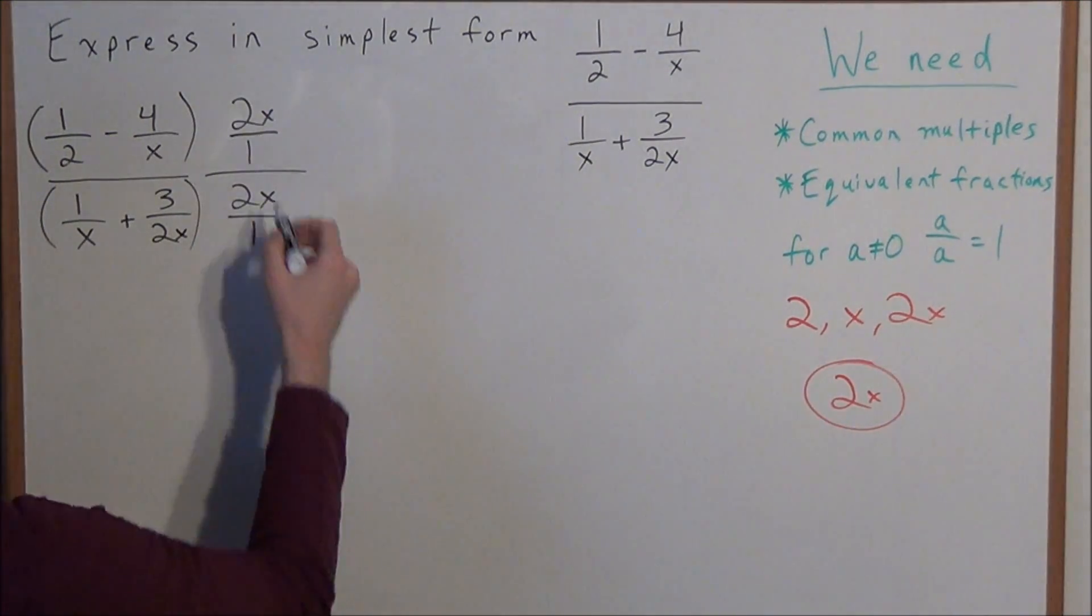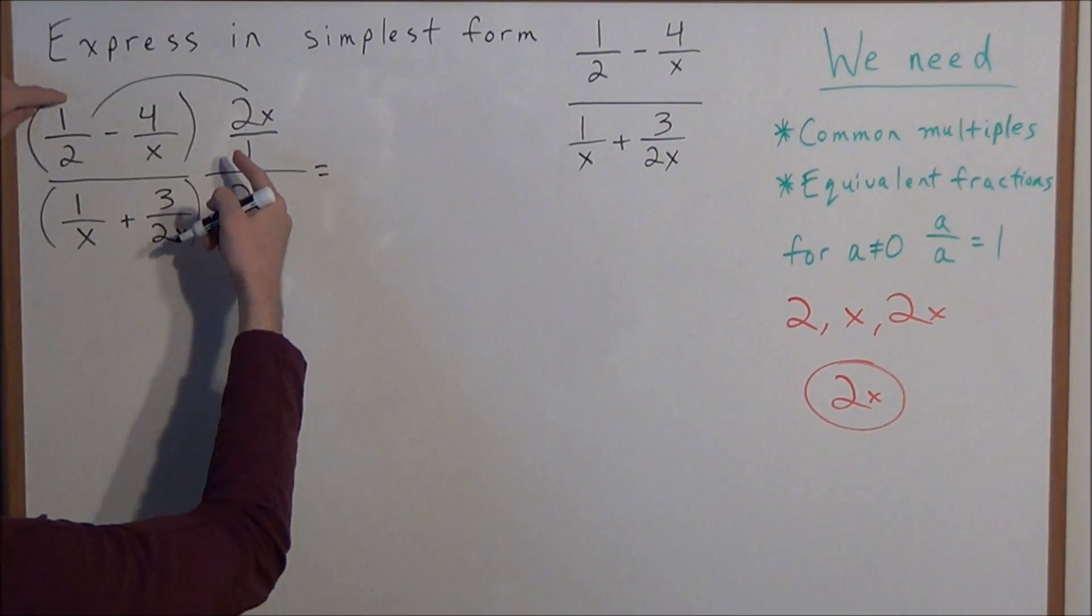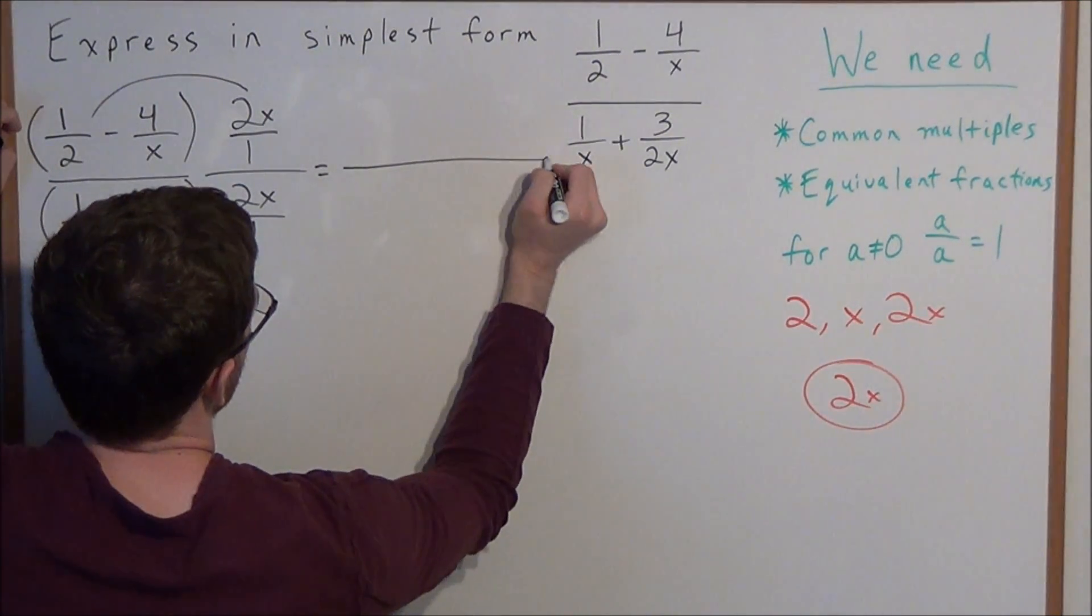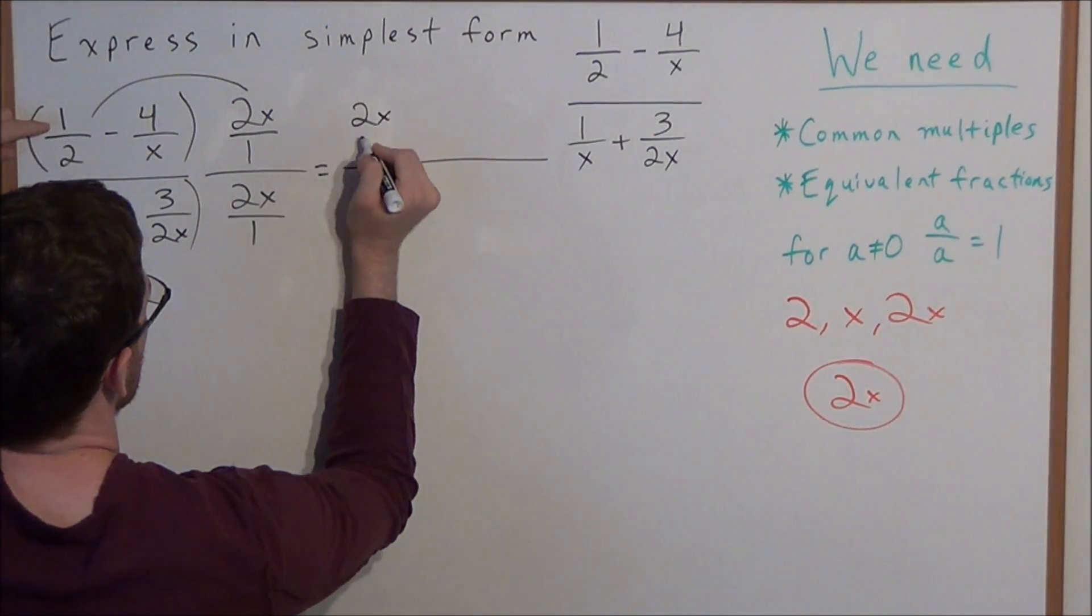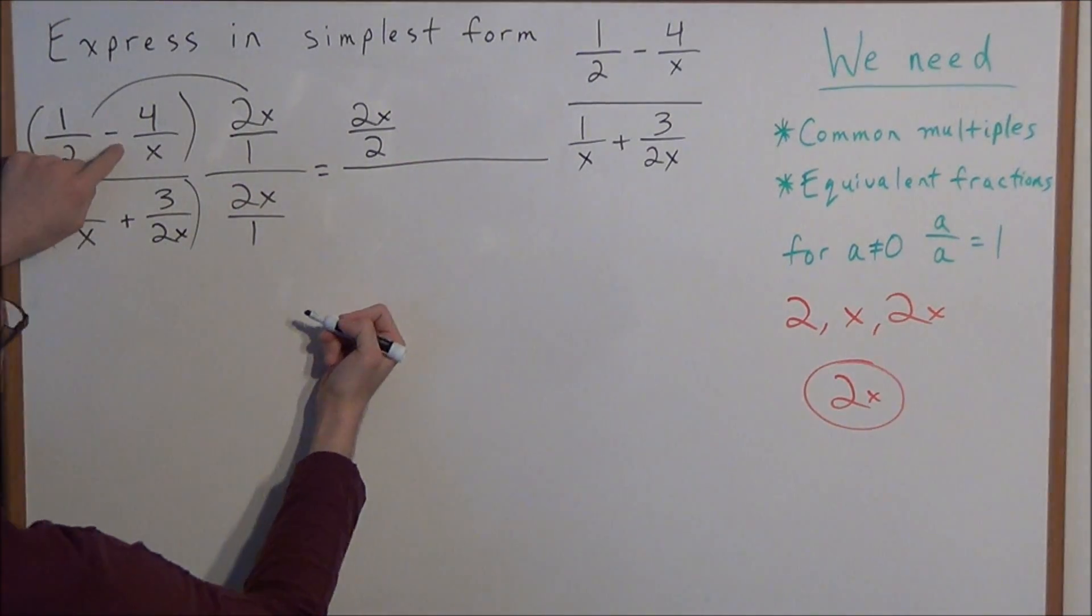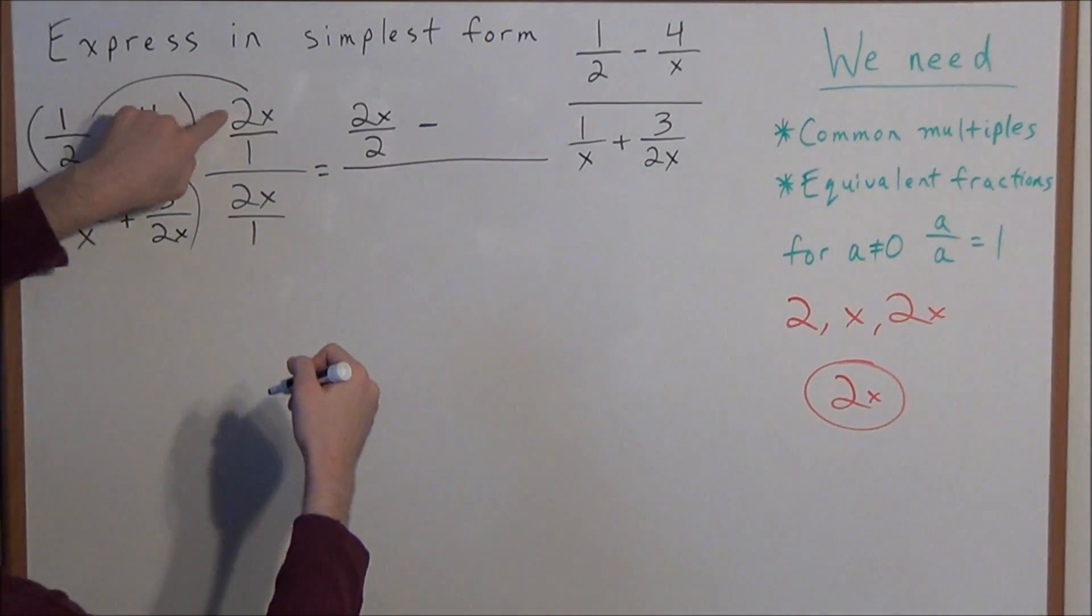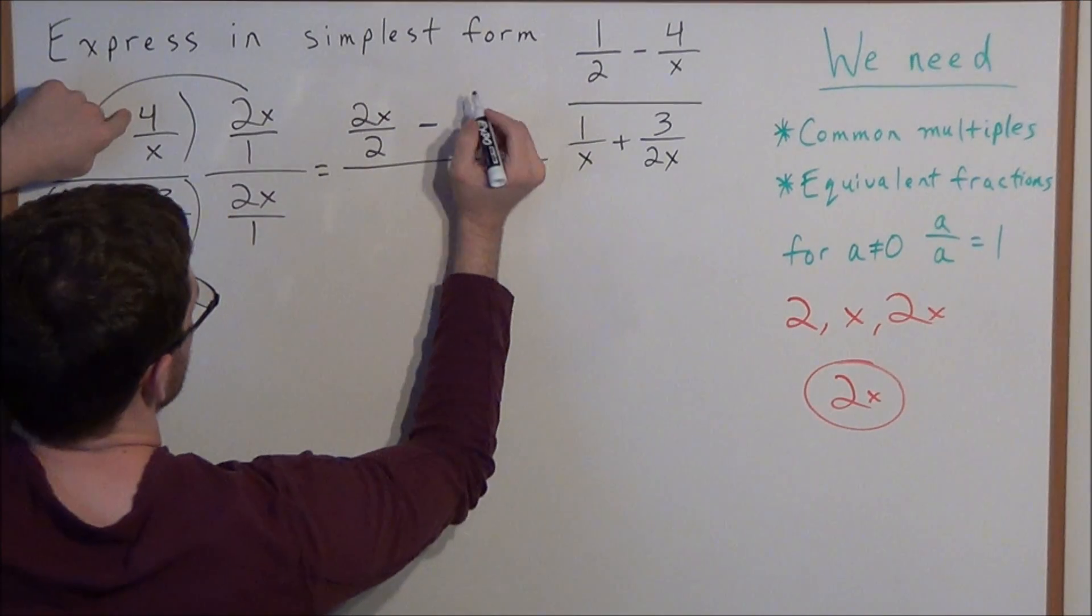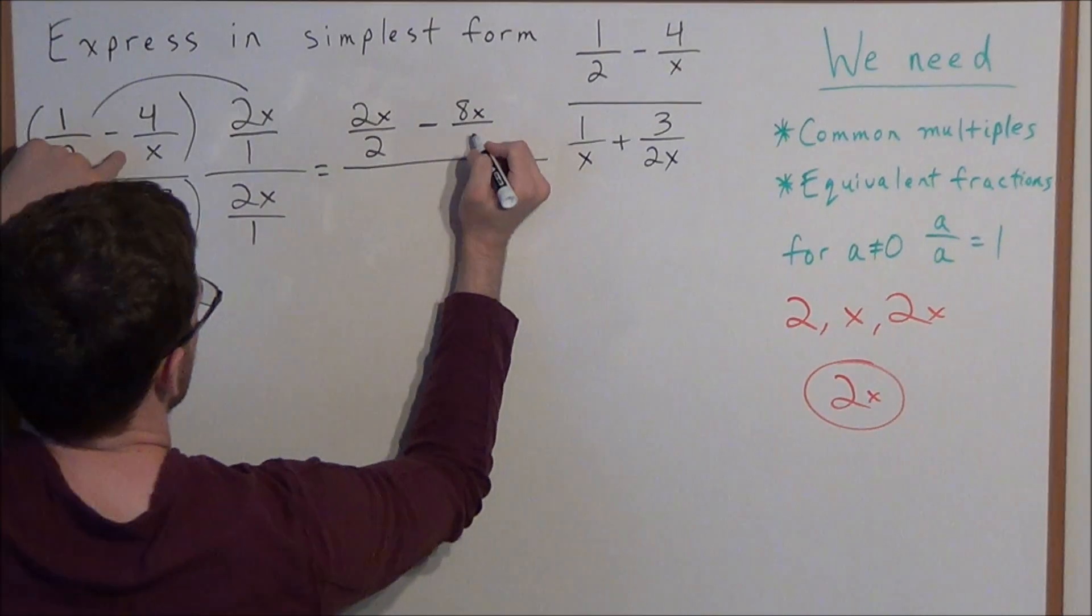So now we need to distribute. So the next line is going to be, we have 1 half times 2x over 1. So we're going to multiply the numerators and denominators. We have 2x times 1 is 2x, divided by, now we have 2 times 1, which is 2. And now minus, and we have 4 over x times 2x over 1. So we're going to multiply 2x times 4, which is 8x, divided by, and now we have x times 1, which is x.